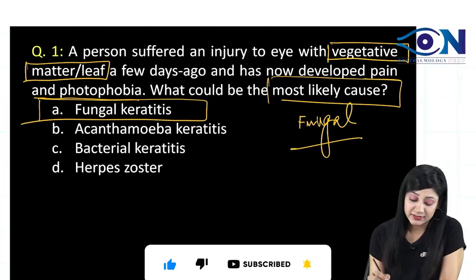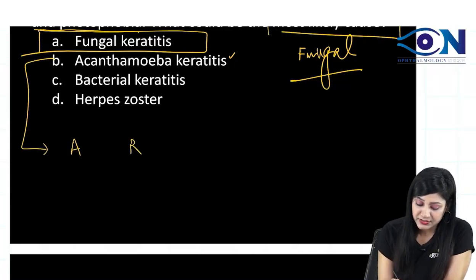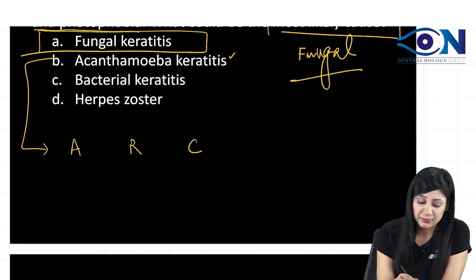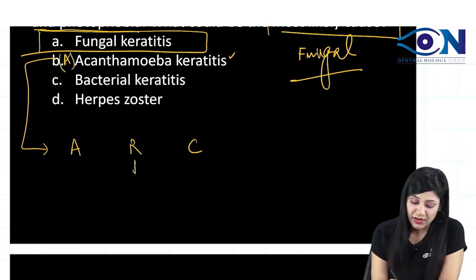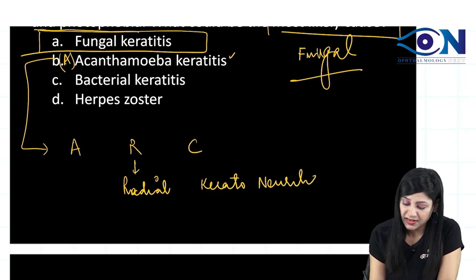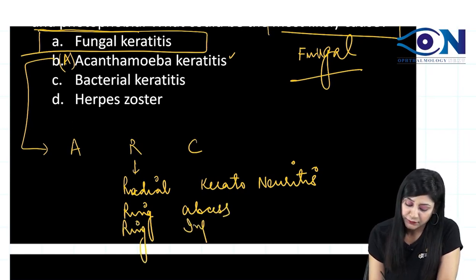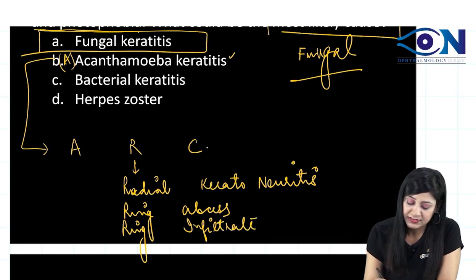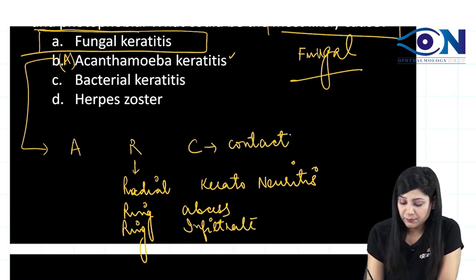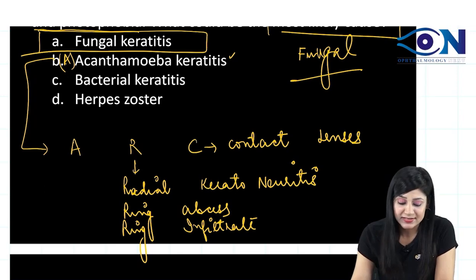Looking at the characteristics of acanthamoeba keratitis, you have to remember the mnemonic ARC: A for acanthamoeba, R for radial keratoneuritis, R for ring abscess, R for ring infiltrate, and C for contact lenses. Remembering ARC will definitely help you in remembering acanthamoeba keratitis.